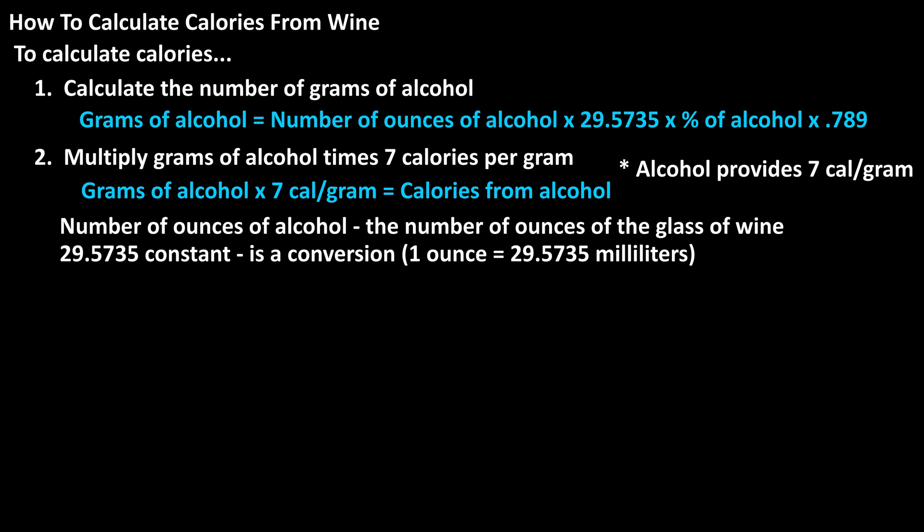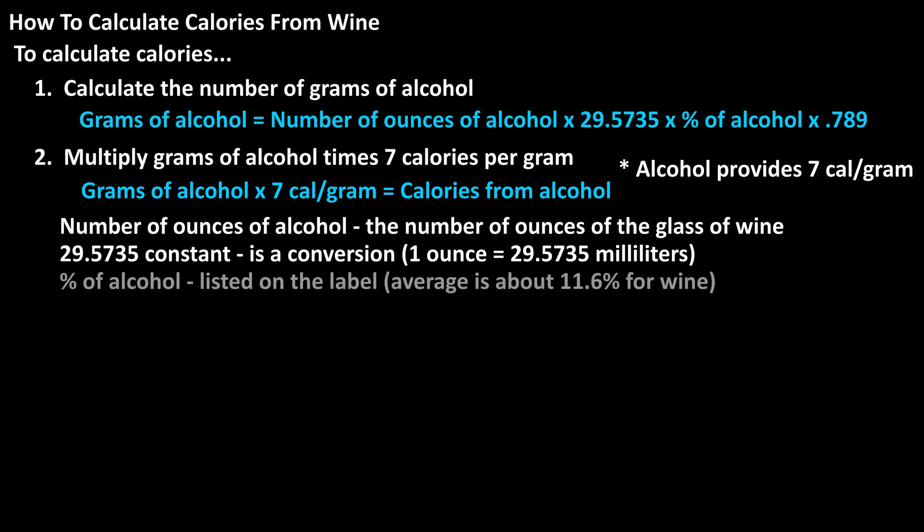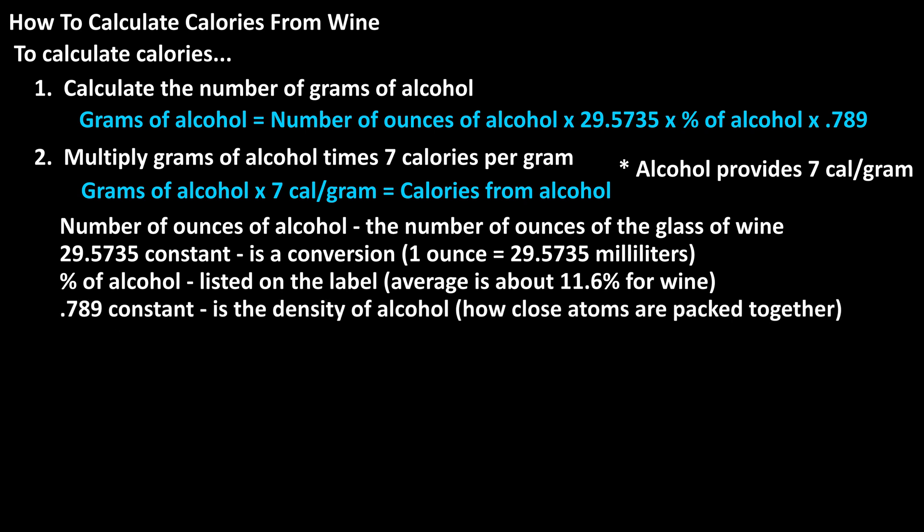The next variable in the formula, the percentage of alcohol, is listed on the label for the particular wine. The average is about 11.6% for wine in general. And the last constant in the formula, 0.789, is the density of alcohol, which basically means how closely its atoms are packed together.